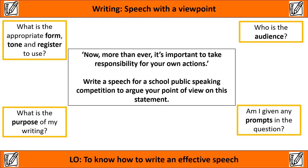The first thing you're going to need to do is decode this question — in other words, think about what this question is actually asking you to do. To help you, there are four orange boxes on the screen. You're going to have a minute to think about: what is the form, tone, and register; who is the audience; are there any prompts or clues in the question; and what is the purpose of your writing — are you arguing, explaining, or discussing? Write down a bullet point for each of those four questions.